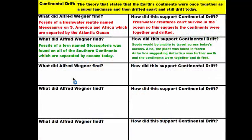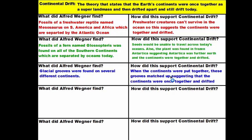Our third piece of evidence is the climate clues: Wegener found that glacial grooves were found on several different continents, and when the continents were put together, these grooves matched up, suggesting the continents were once together and then drifted.